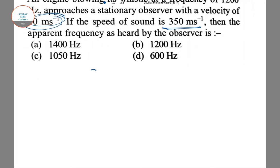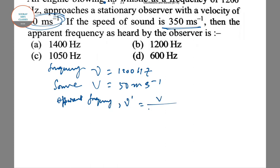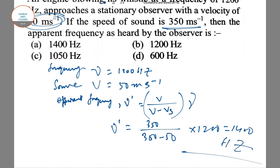How to deal with this question? First you need to write the frequency, velocity of the source, and apparent frequency. The formula is ν' = V/(V - Vs) × ν. Putting the values directly we can say this value is 1400 Hz. So option A is correct. Next question is.